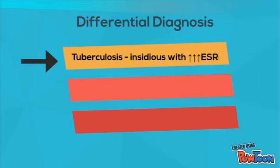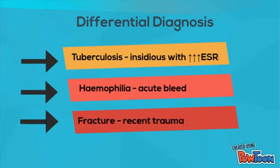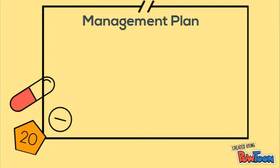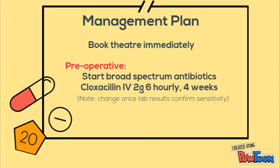The differential diagnosis of a monoarthritis includes TB, which would have an insidious onset and an ESR above 100; an acute bleed in hemophiliacs, which will show blood on synovial joint aspiration; and a fracture, where you would ask about trauma history.